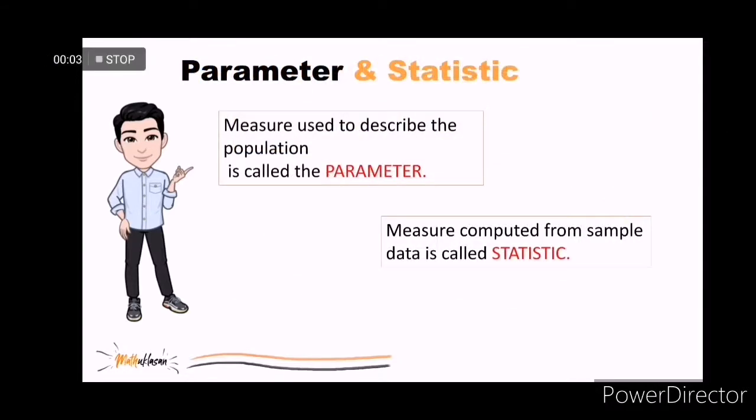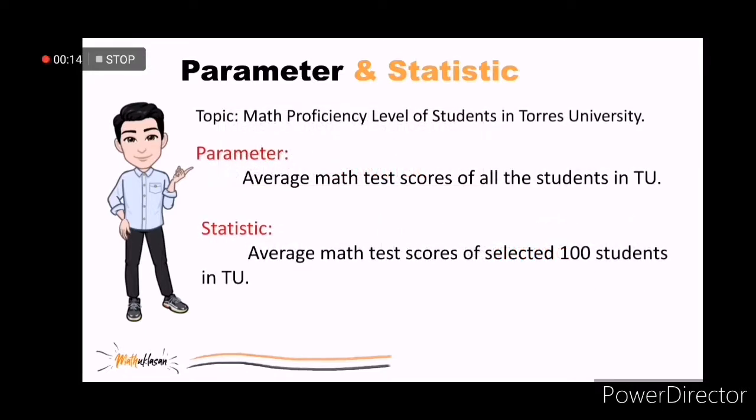A parameter is a measure that describes a characteristic of a population, and a statistic is a measure that describes a characteristic of a sample. If your topic is about the math proficiency level of students in Torres University, the average math test scores of all the students in TU is an example of a parameter, because this refers to the entire average of the population. On the other hand, the average math test scores of 100 students is an example of a statistic.